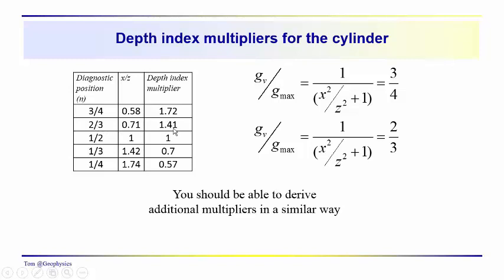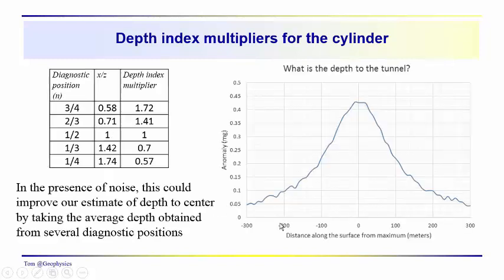Or at two-thirds, we'd multiply that by 1.41. X_2/3 times 1.41 would give you Z. All these estimates of Z should be the same. And you should be able to derive additional multipliers, these additional multipliers, just following this approach if you'd like.